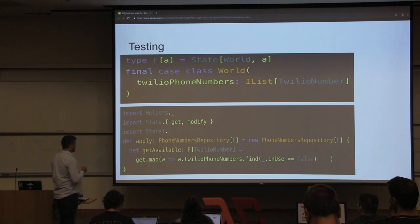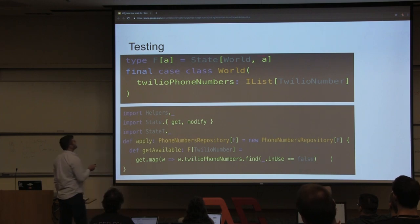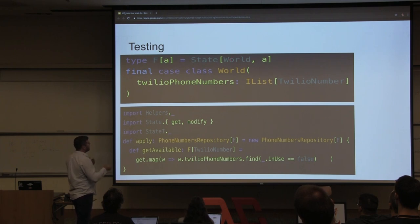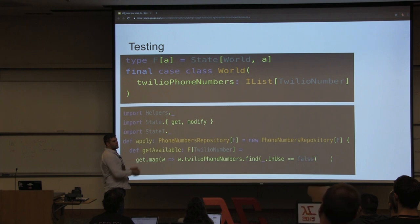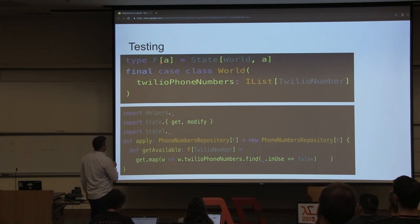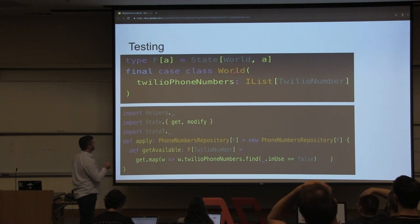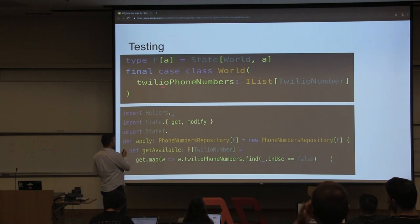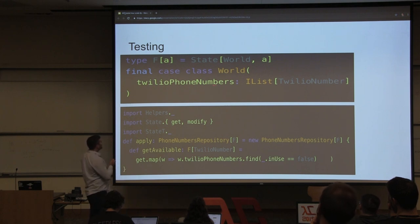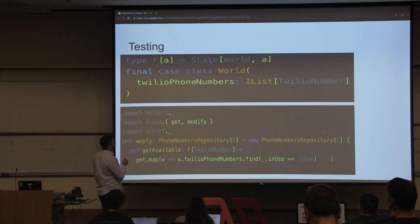There's a thing called a State Monad — ScalaZ or Cats will provide it. It has two type parameters: it lets you operate over some state, return the answer, and return the new state. To make State look like an F of A, we parameterize it with one type already, which is going to be a case class called World. World represents our database — basically a list of phone numbers. With this type we can now implement our phone numbers repository where F is State of World and A.